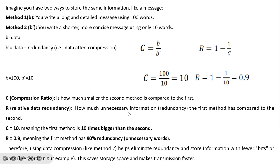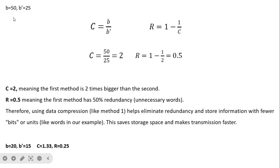Relative data redundancy R = 0.9 means the first method has 90% unnecessary information compared to the second. In another example, original data is 50 words and compressed data is 25 words, giving C = 50/25 = 2 and R = 1 − 1/2 = 0.5. This means the first method is 2 times bigger than the second and has 50% redundancy. By using compression, we remove the redundancy present in the data.